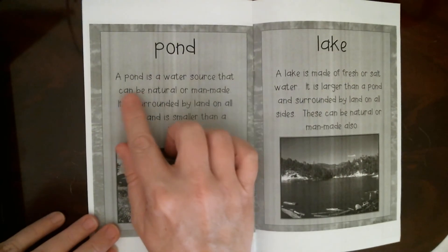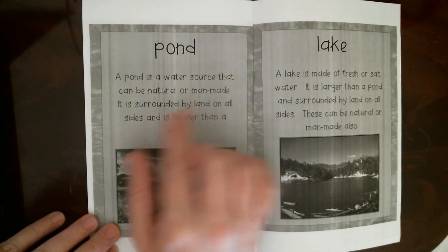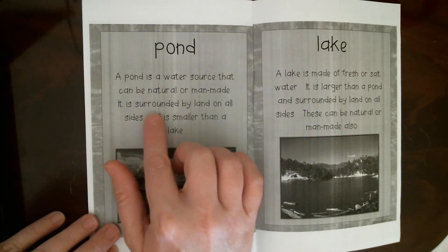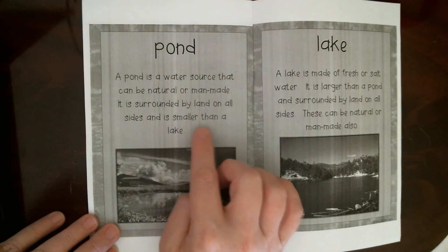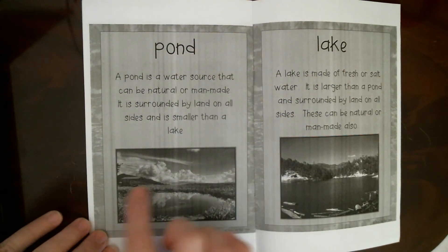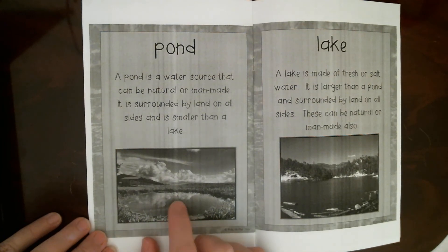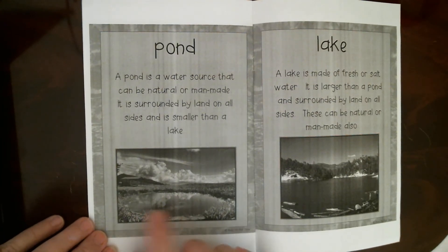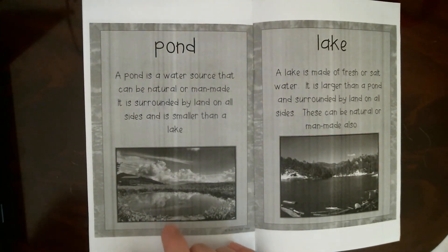A pond is a water source that can be natural or man-made. It is surrounded by land on all sides and is smaller than a lake. You can walk all the way around a pond — they're a lot smaller than lakes. A lot of people will build these in their backyard and put some fish called koi in them.